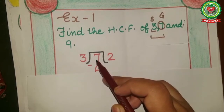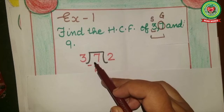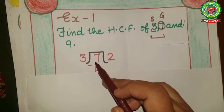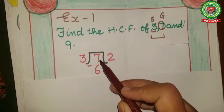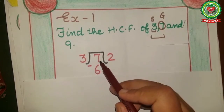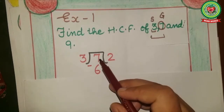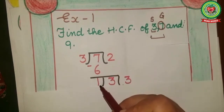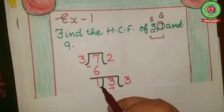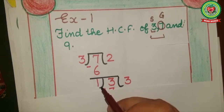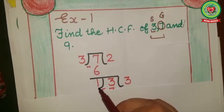Now we will check: does 7 come on the 3 times table? No, 7 doesn't come on the 3 times table. So we take the number less than 7 that does come on the 3 times table — that number is 6, because 3 twos are 6. Next step: 7 minus 6 equals 1. Now what was step two? Step two was: if the remainder equals zero, then stop dividing. But here the remainder is 1, which is not equal to zero.